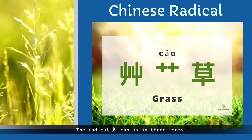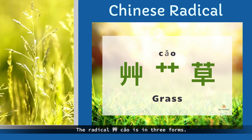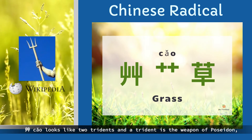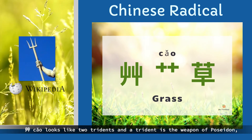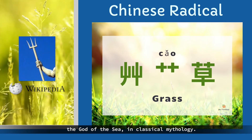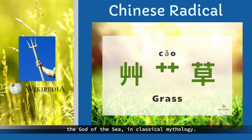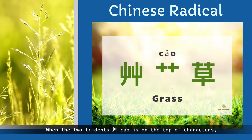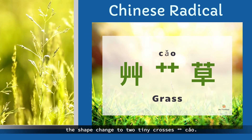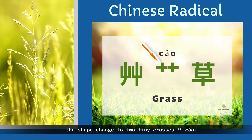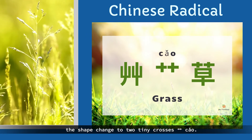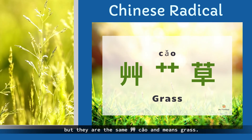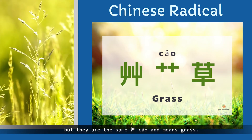The radical 草 is in three forms. 草 looks like two tridents — a trident is the weapon of Poseidon, the god of the sea in classical mythology. When the two tridents 草 is on the top of characters, the shape changes to two tiny crosses. 草 in both forms looks different, but they are the same 草 and mean grass.